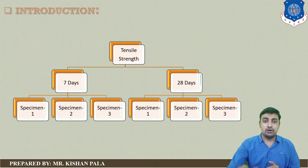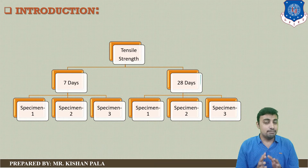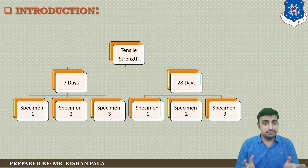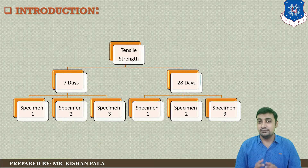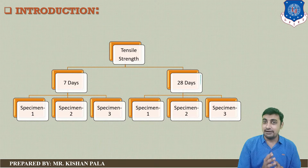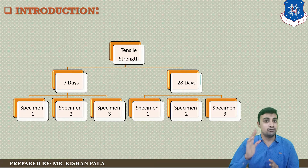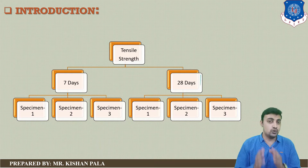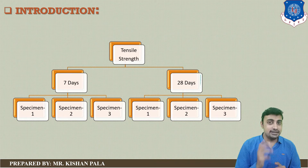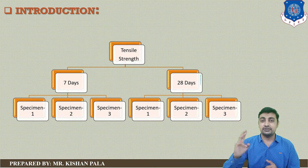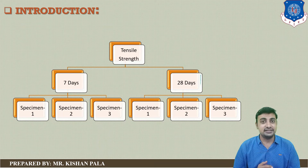If we talk about the number of specimens required for this test, as we know, we are finding the strength of the concrete mass at 7 days and 28 days. So we require 3 specimens for 7 days and 3 specimens for 28 days.